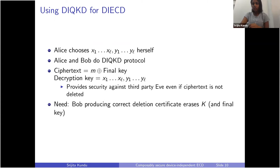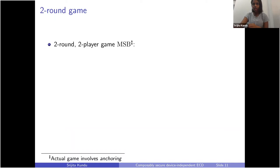What we also need is for Bob to produce a deletion certificate in such a way that if Bob produces the correct deletion certificate, then that erases the raw key K. If we erase the raw key, that also erases the final key, and because we've XOR'd the message with the final key, if Bob does not know the final key, then Bob does not know the message either. In order to do this deletion, we're going to consider a two-round game, which I'll call NSD.